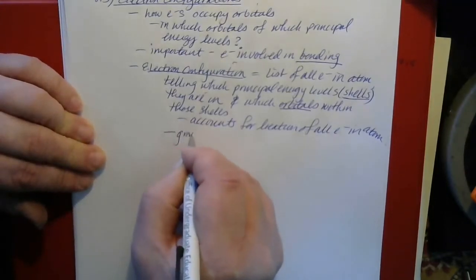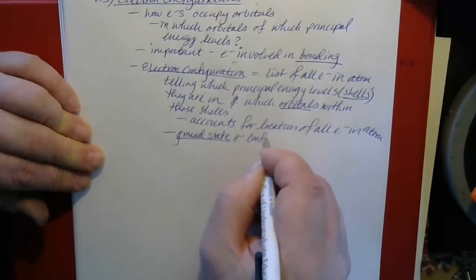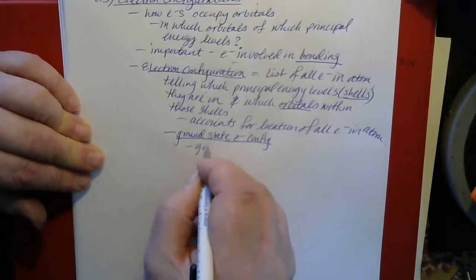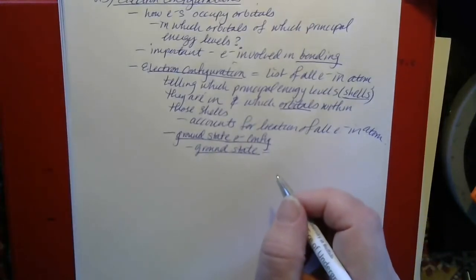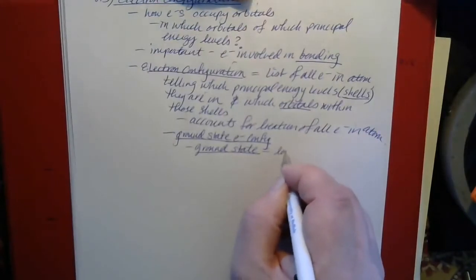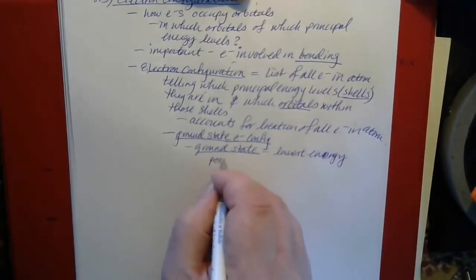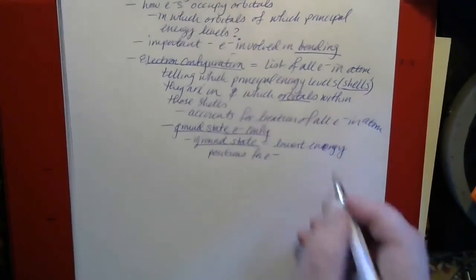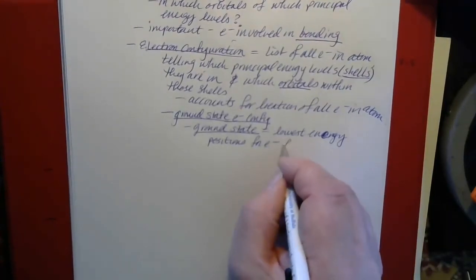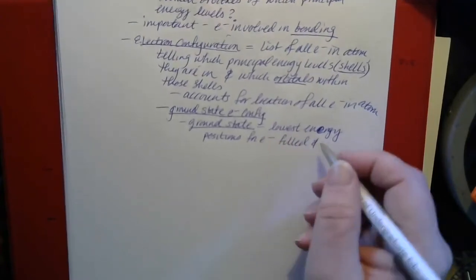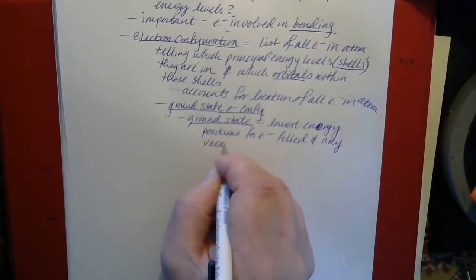For an example, the ground state electron configuration — the ground state is the way an atom would normally be found. It's the lowest energy version of the atom, so the lowest energy positions for electrons are filled, and any vacancies occur only in the highest energy positions.